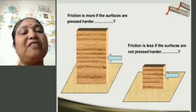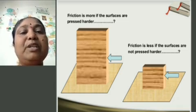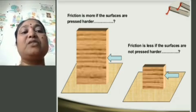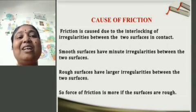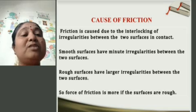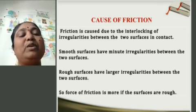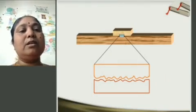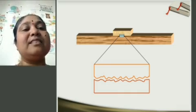Friction is more if the surfaces are pressed harder. If the object is very hard, the friction will be more if the surfaces are pressed harder. Friction is less if the surfaces are not pressed harder. The causes of friction: friction is caused due to the interlocking of irregularities between the two surfaces in contact. Smooth surfaces have minute irregularities, while rough surfaces have large irregularities between the two surfaces. The force of friction is more if the surfaces are rough.